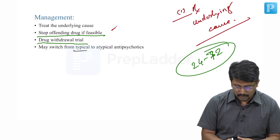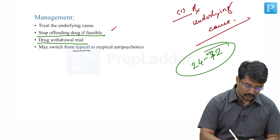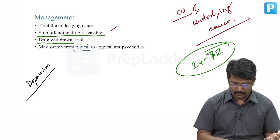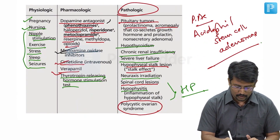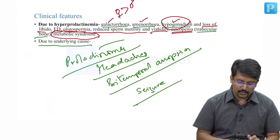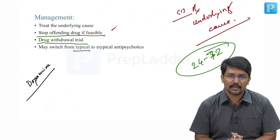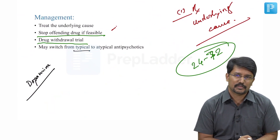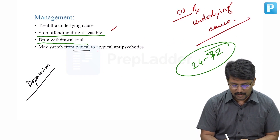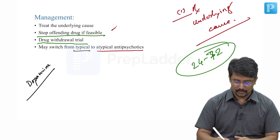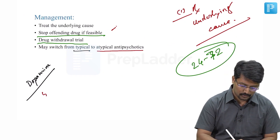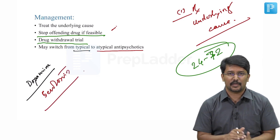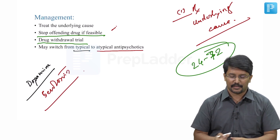If it is caused by typical antipsychotics, remember that typical antipsychotics mainly act through dopamine receptors — they are all dopamine antagonists. So if a typical antipsychotic is causing hyperprolactinemia and stopping the drug is not practically possible, you can switch to atypical antipsychotics, which have action apart from dopamine and also act through serotonin receptors.